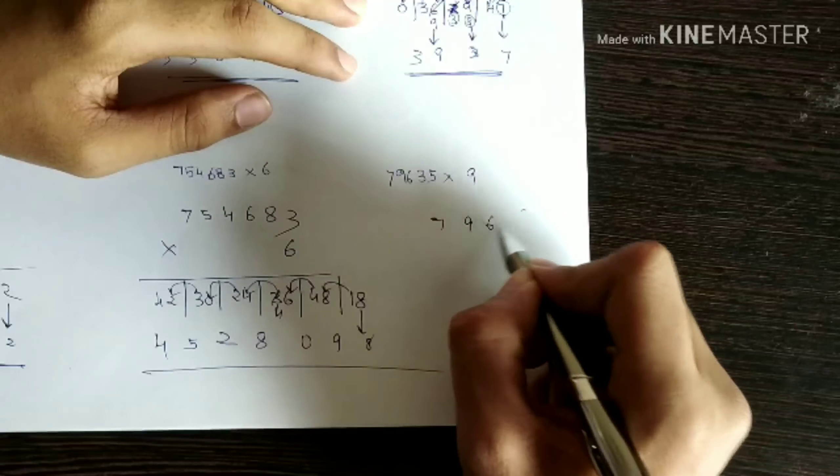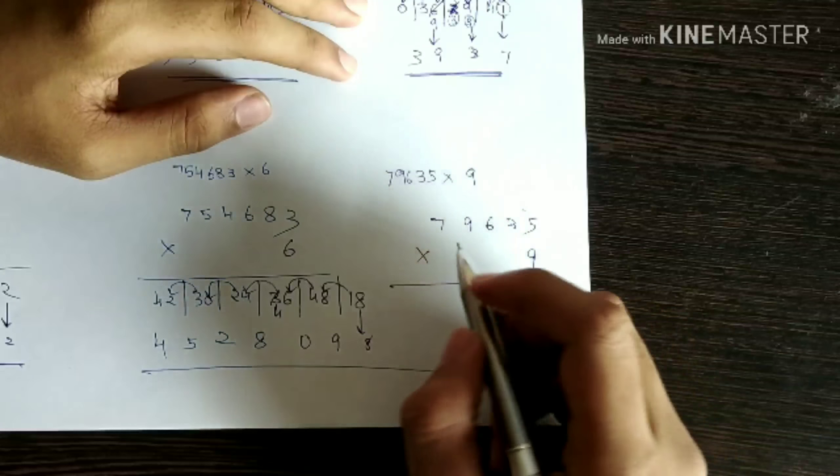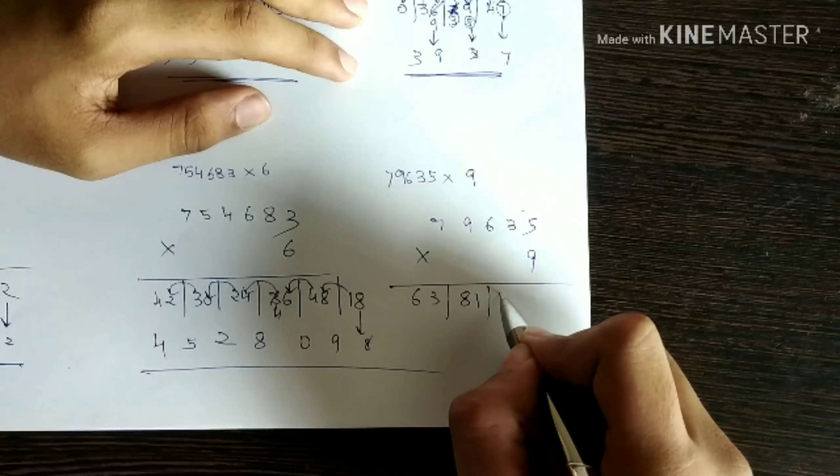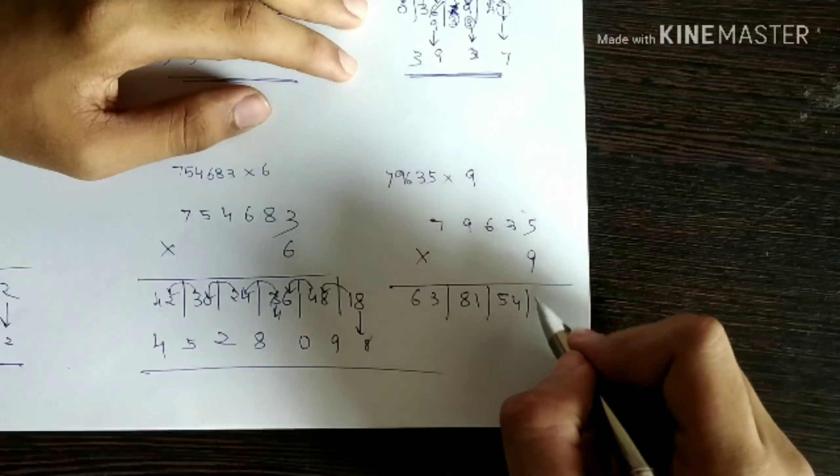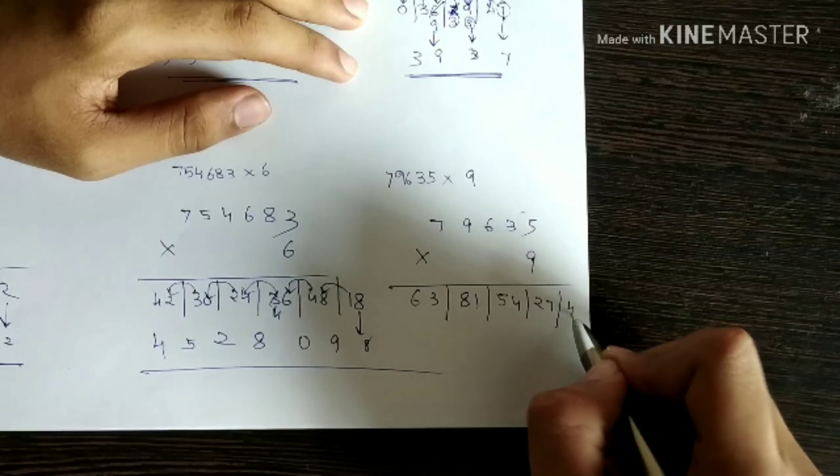Now the next question. Seven nine six three five times nine. Seven nines are sixty three. Nine nines are eighty one. Six nines are fifty four. Nine times three, that becomes twenty seven. Nine times five is forty five.